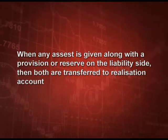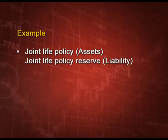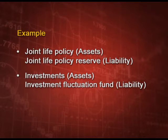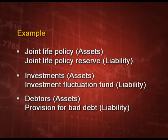Another important adjustment: when any asset is given along with a provision or reserve on the liability side, both are transferred to the realization account. For example, if joint life policy appears as an asset in the balance sheet and joint life policy reserve appears on the liability side, both will be transferred to the realization account — asset on the debit side and reserve on the credit side. Similarly, if investment is given along with investment fluctuation fund, investment will come on the realization debit side and investment fluctuation fund on the realization credit side. If debtors are given along with provision for bad debt, debtors will come on the realization debit side and provision for doubtful debt on the credit side.